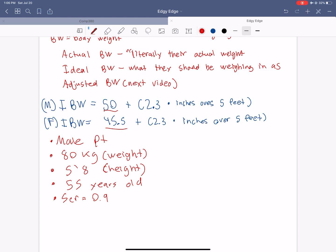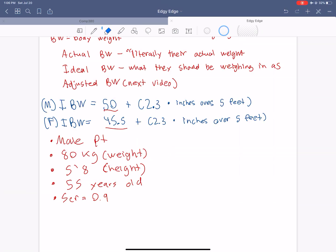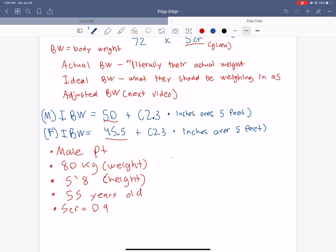So first, before we go into the creatinine clearance formula up here, let's first calculate his ideal body weight. So ideal body weight, we're going to look, okay, 50. So ideal body weight is equal to 50 plus 2.3 times inches over 5 feet. So how tall is he? He's 5 foot 8. So he's 8 inches over 5 feet, so he would be 8 over here.